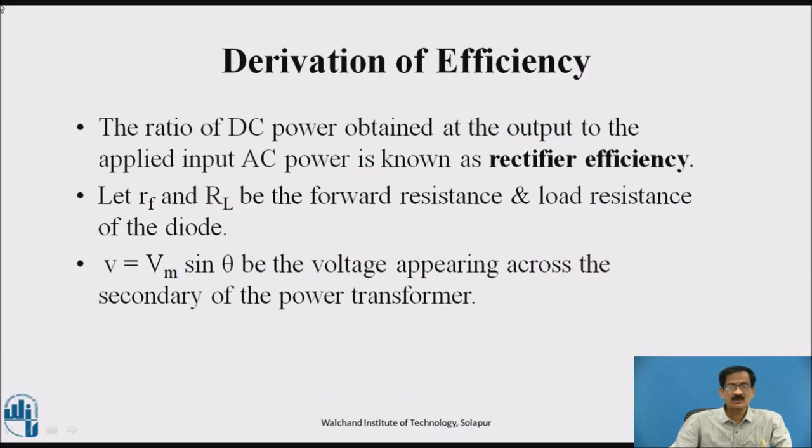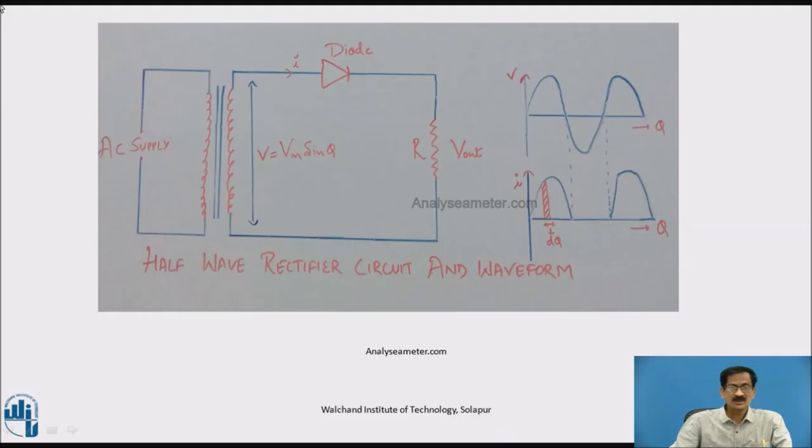Derivation of efficiency: The ratio of DC power obtained at the output to the applied input AC power is known as the rectifier efficiency. Let RF and RL be the forward resistance and load resistance of the diode. V equals Vm sin theta be the voltage appearing across the secondary of the power transformer. Let us start deriving the average and the RMS values.